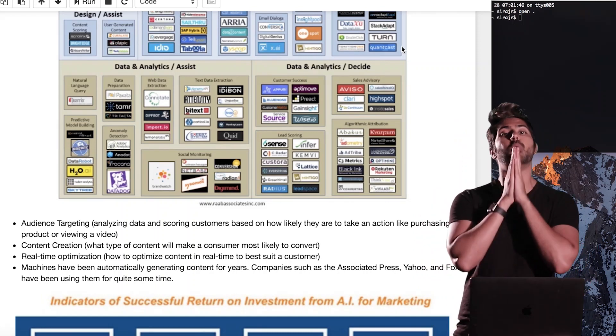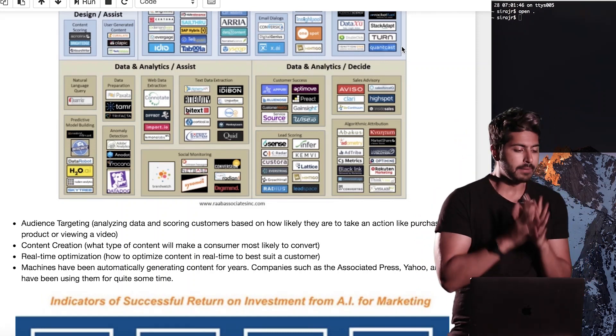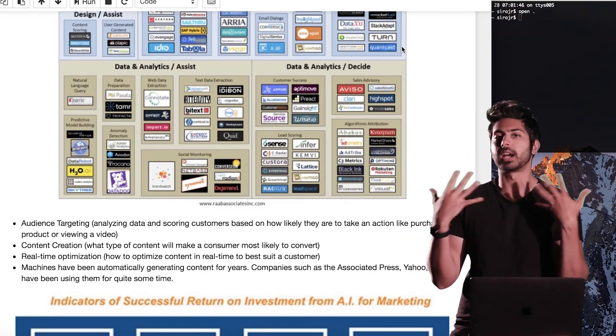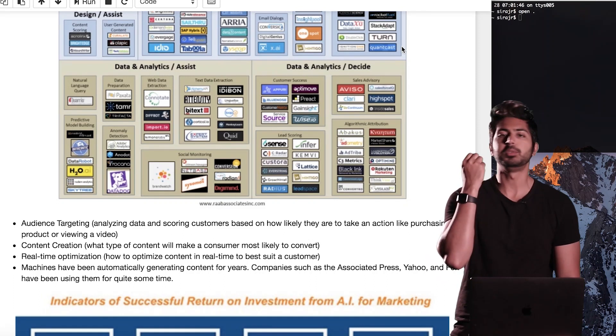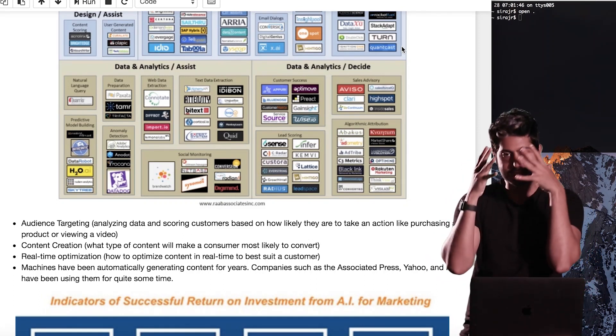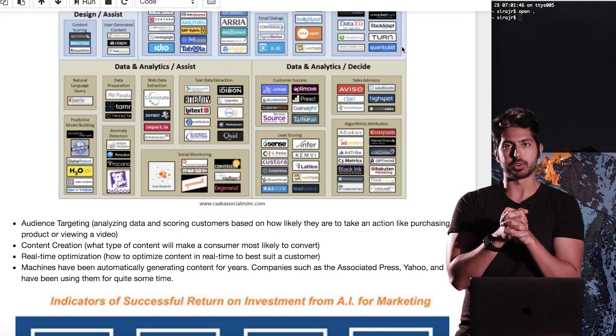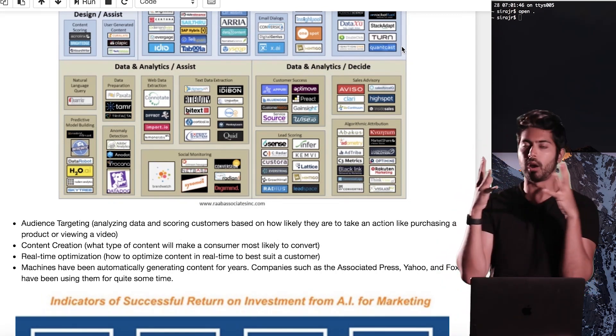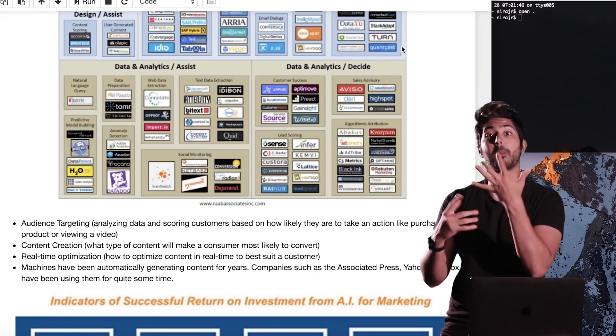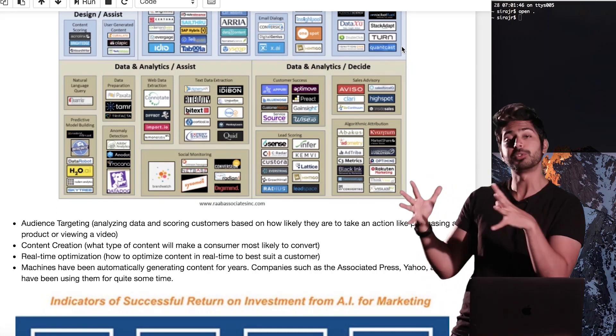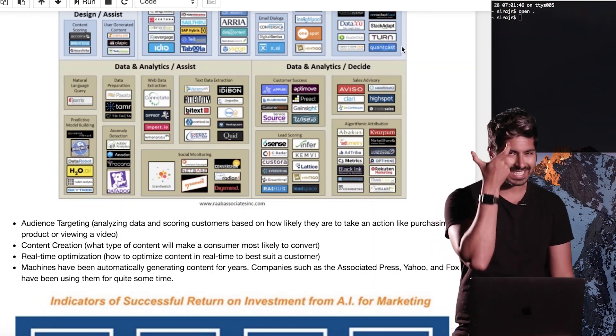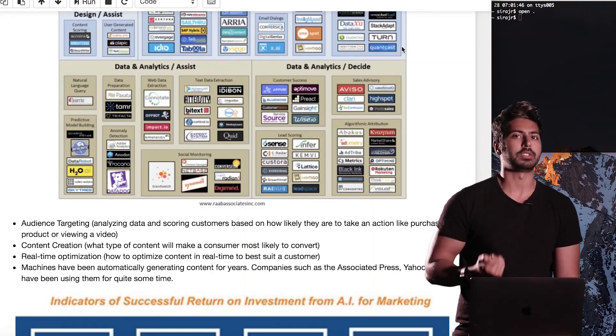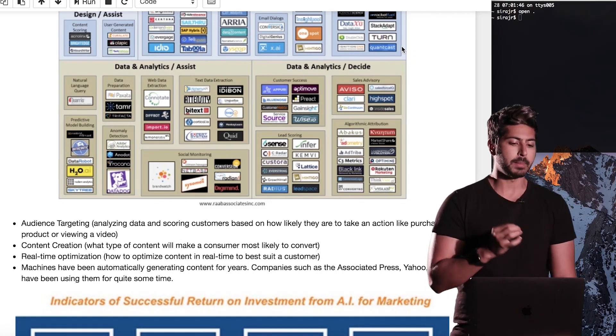So let's start off with the ways that AI can be used in marketing. One way is through audience targeting. So if you have some startup, a company, a brand, you have an audience of customers. And if you have some new product, you want to target the specific subset of your customers that are going to be most willing to convert into sales. You don't want to waste your time, your energy, your money, your resources on customers who won't convert. And so how do you target those exact customers that would be most likely to convert? This is a perfect use case for AI.